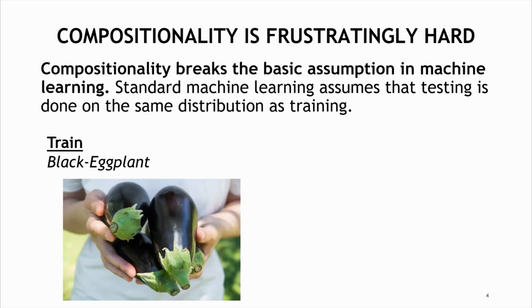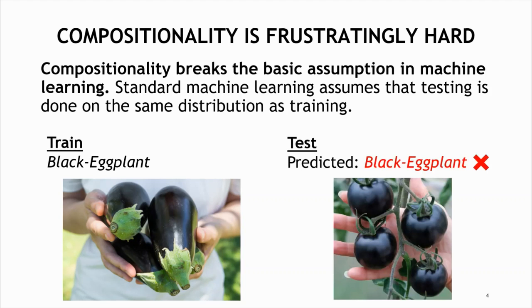For example, if training did not include any black tomato, but did include black eggplants, models tend to learn that black is predictive for an eggplant and make an incorrect prediction predicting the tomato as an eggplant.